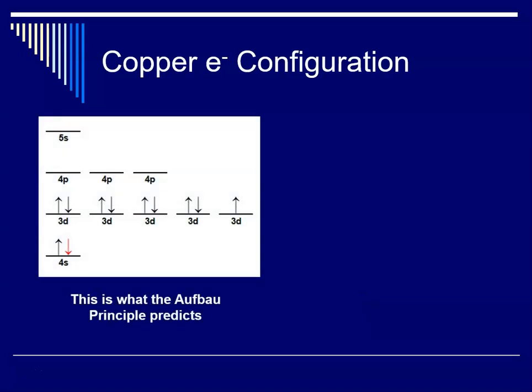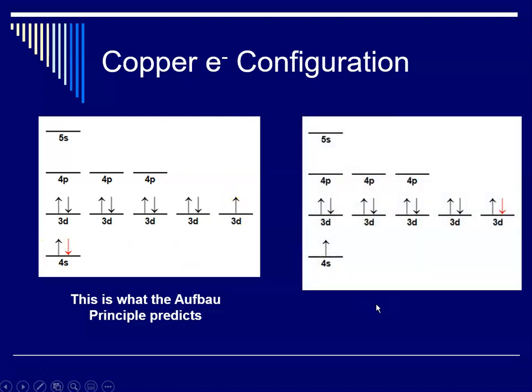So again, the Aufbau principle would predict the 4s² and 3d⁹. And what actually happens experimentally is the 4s electron actually goes up and fills the 3d sublevel. So it turns out that having all the five d orbitals filled with paired electrons is more stable, and so we end up with just one electron in the s level.